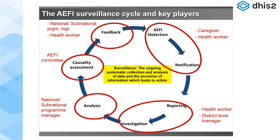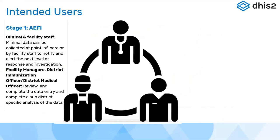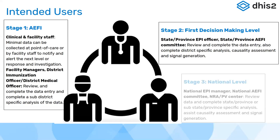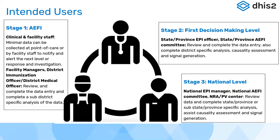I would pay particular attention to the AEFI detection, notification, reporting, investigation, analysis — kind of going around the cycle. What we don't fully cover in the package is the causality assessment — this piece is more extended and complex and happens at the country level — but all of the previous cycle is meant to be modeled in the DHIS2 package, as well as information that is used for feedback and analytics. The package is essentially a small three-stage program: the first focusing on the staff responsible for entering the data into the WHO form.